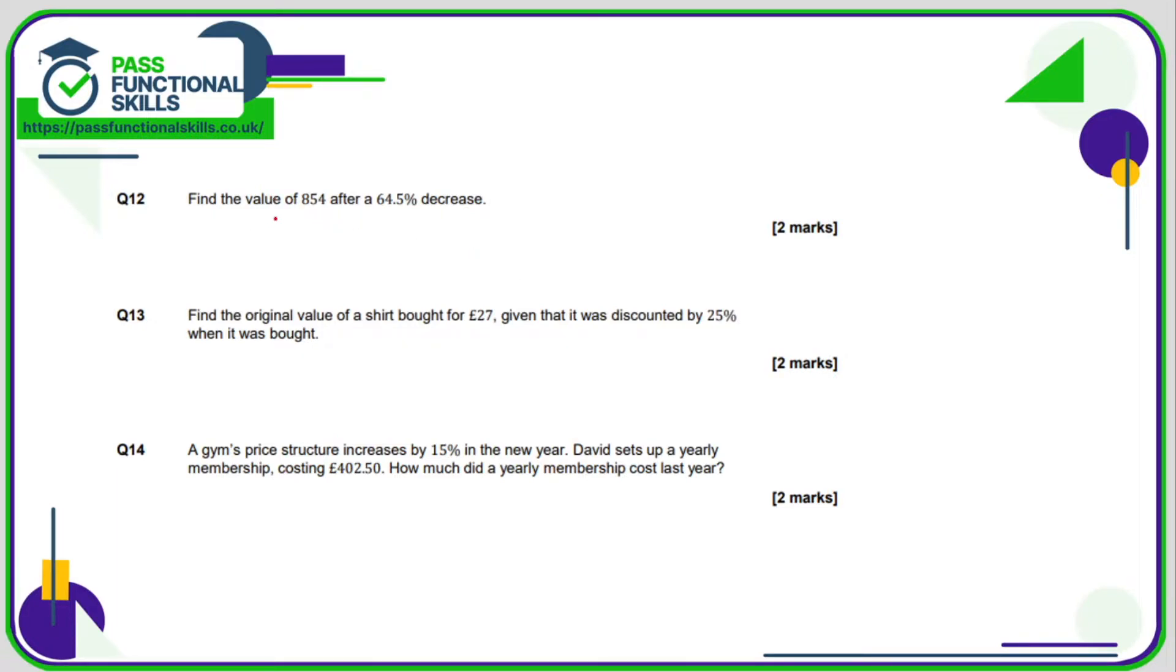Question number 12, find the value of 854 after a 64.5% decrease. So what I'm going to do first of all is work out what 100% minus 64.5 is, and that comes to 35.5. So basically, if I'm reducing something by 64.5%, all I need to do is work out 35.5% of the original amount.